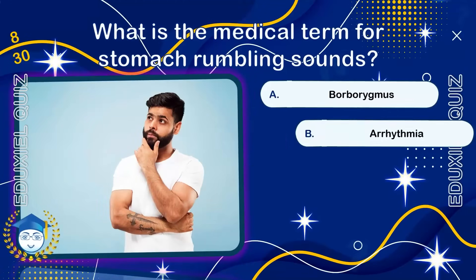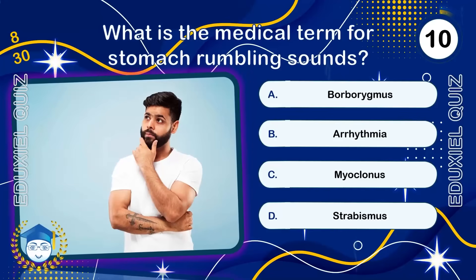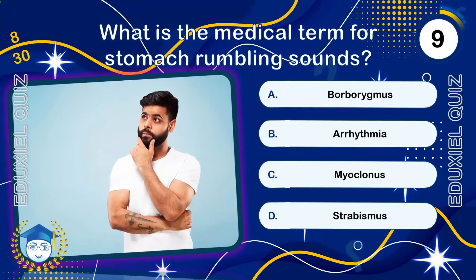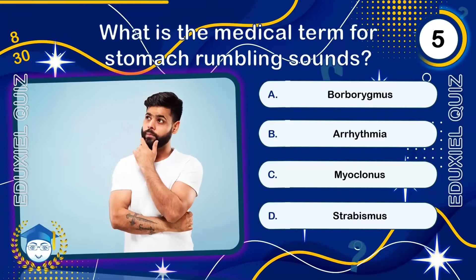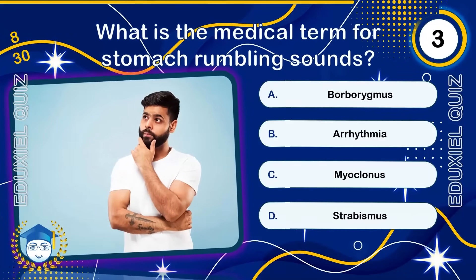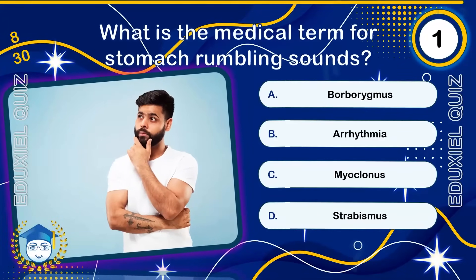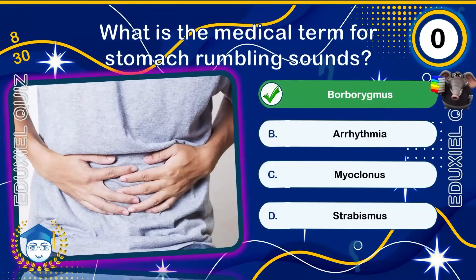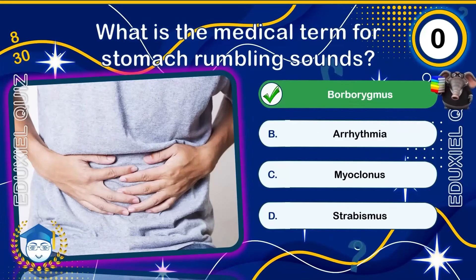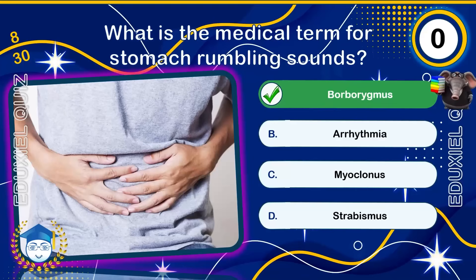What is the medical term for stomach rumbling sounds? Borborygmus refers to the rumbling sounds produced when gas and fluids move through the intestines. It is a normal digestive process, especially pronounced when the stomach is empty. Doctors use its presence or absence to assess bowel activity.